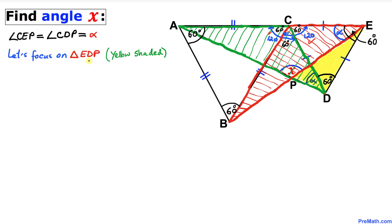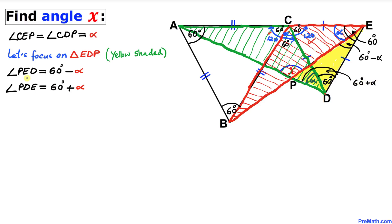Now let's focus on triangle EDP, shaded yellow. We can see that angle PED is going to be 60 degrees minus alpha, and angle PDE is going to be 60 degrees plus alpha.